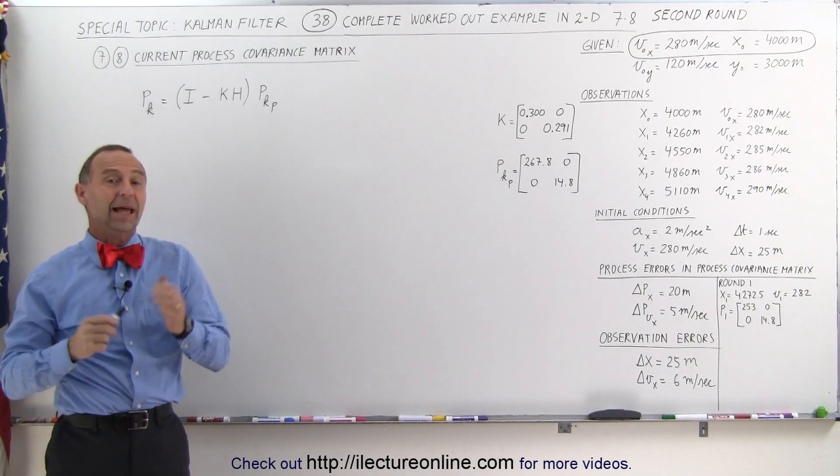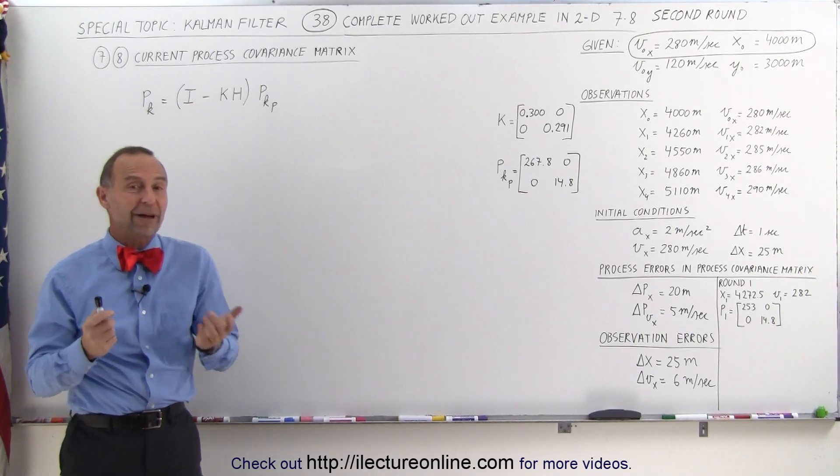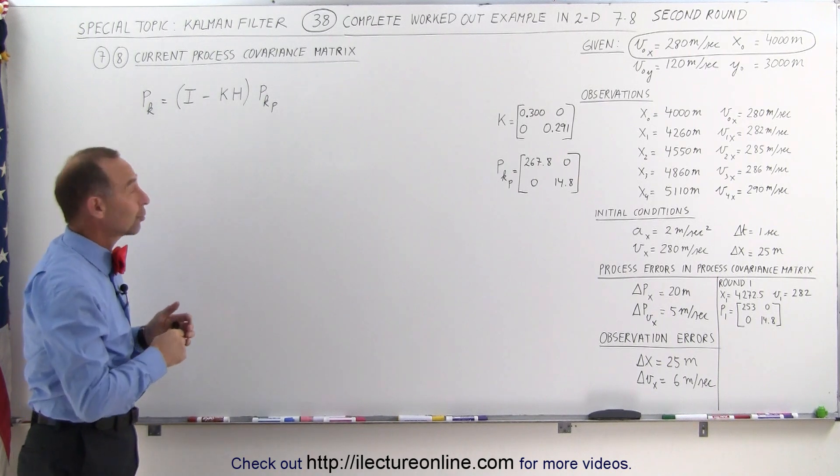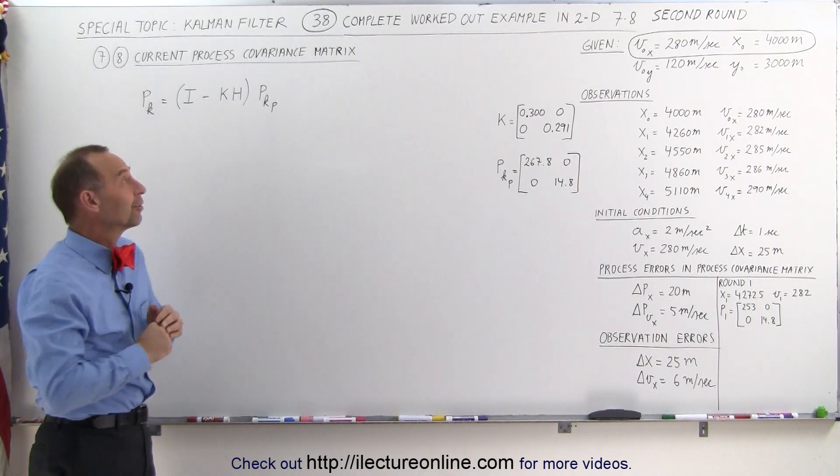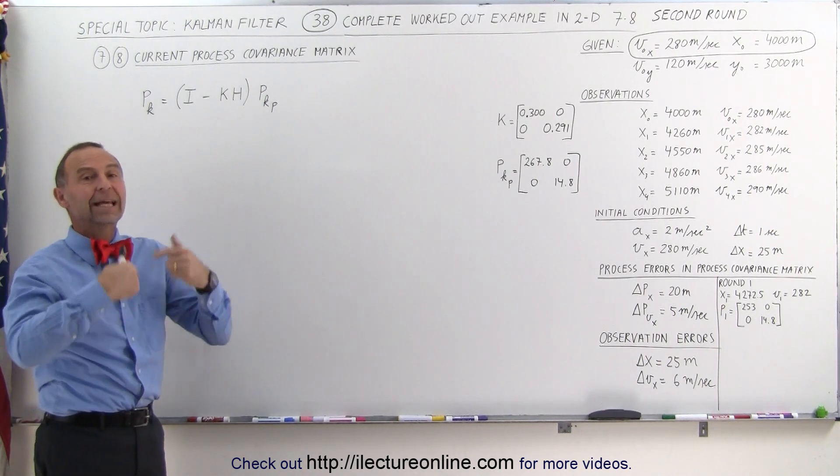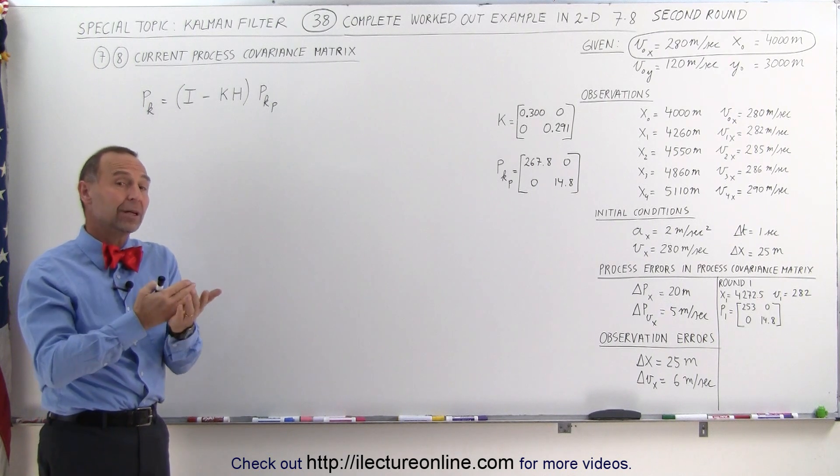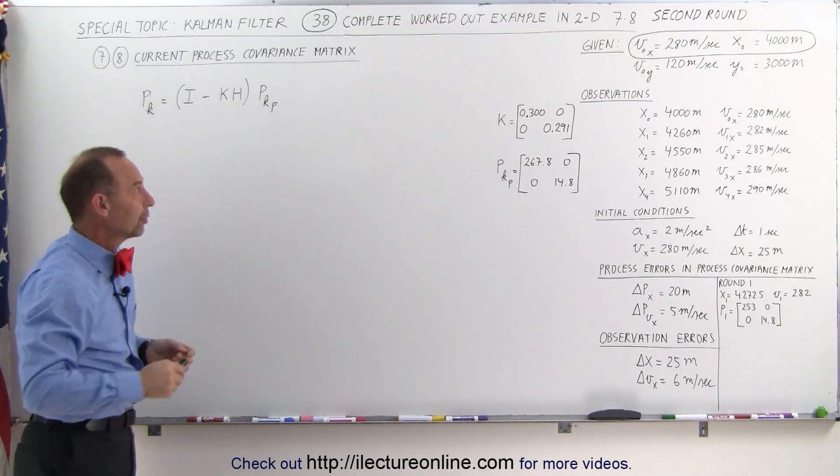Welcome to Electron Line. The last two steps for round two are now finding a new process covariance matrix, or I should say the current process covariance matrix, and then get it ready for the next round, round three, where we then realize that the current becomes the previous for round three.